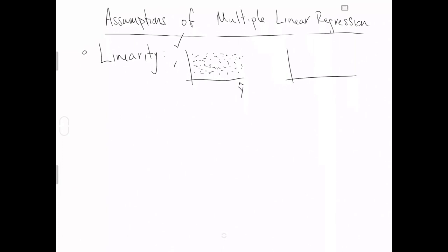An example of a bad plot is if you have some sort of pattern through your data — in the extreme, like an arc. If you have an arc through your data, that suggests your multiple linear regression model is not going through the center of the data, because it seems to be fitting above all the data on the ends but below all the data in the middle.